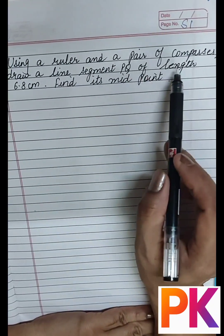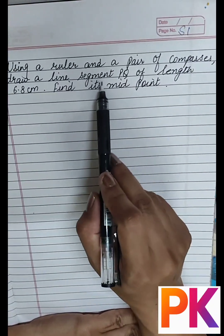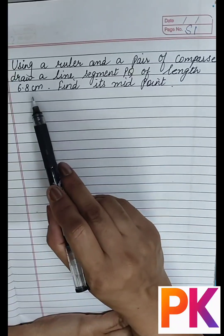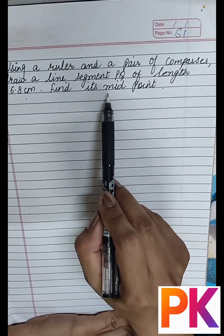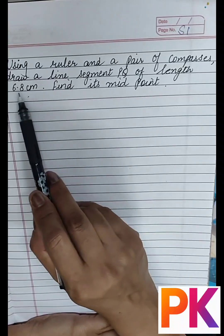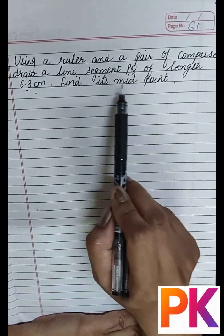The question is: using a ruler and a pair of compasses, draw a line segment PQ of length 6.8 cm and find its midpoint. In this question, we have to draw a line segment PQ of length 6.8 cm and then find its midpoint.